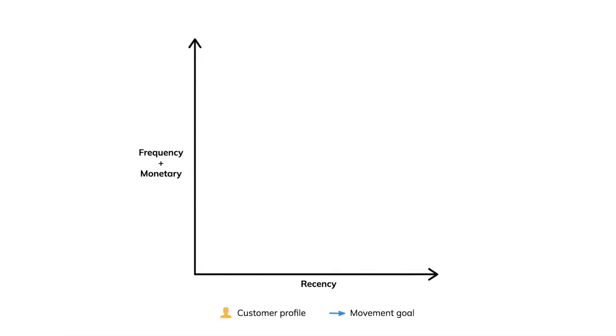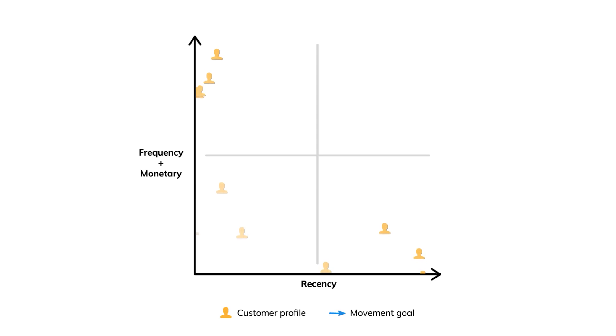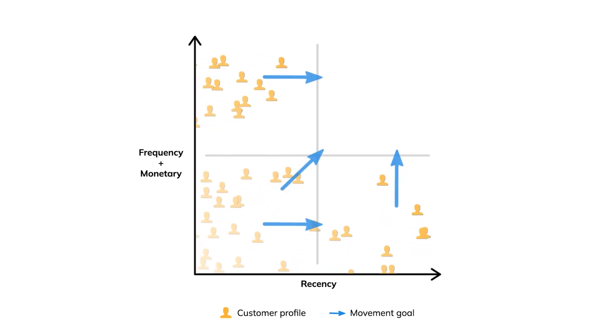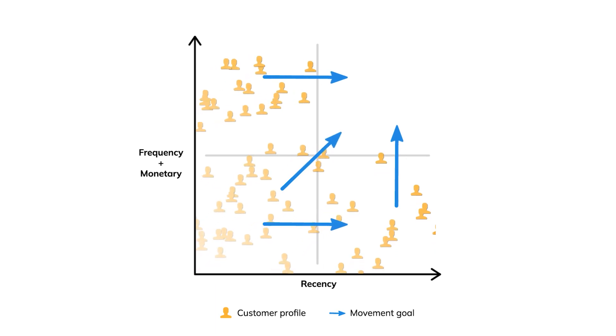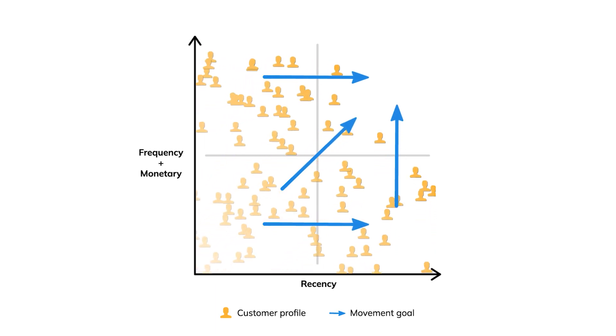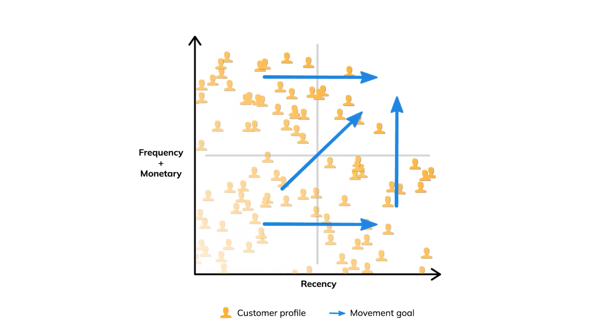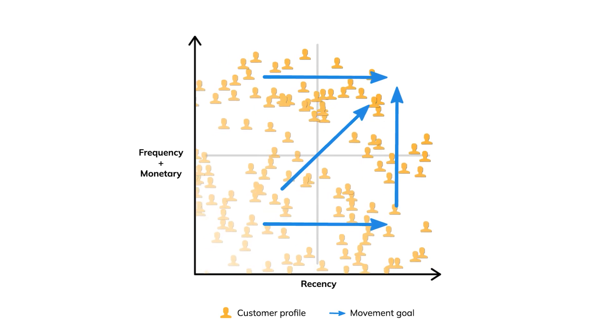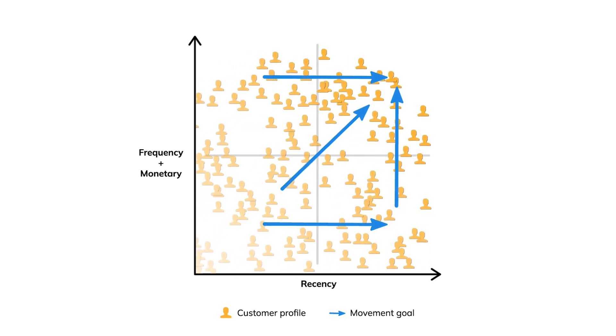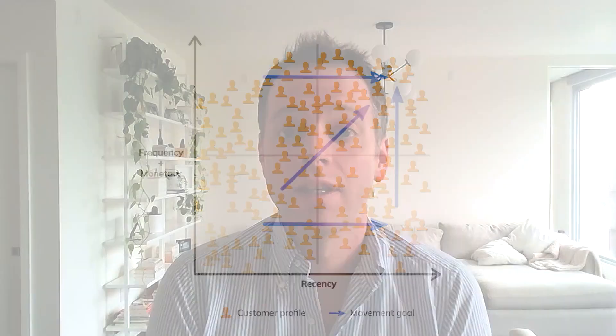SkyPoint Cloud's RFM model segments your customers into 10 standard segments. The whole idea and theory behind it is: if you can really understand who your brand champions are, why would you treat them the exact same way as a brand new customer or somebody that was a customer six months ago and is now lost to your brand? They all need different things from your brand, and SkyPoint Cloud's RFM model enables that.